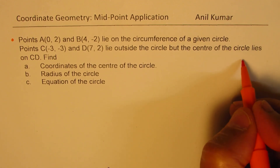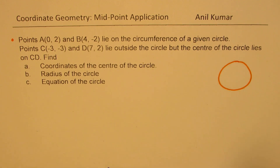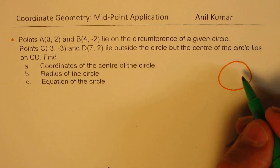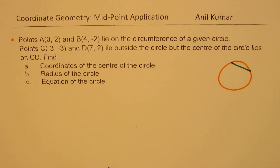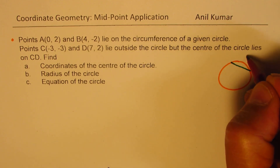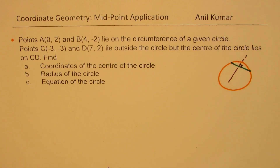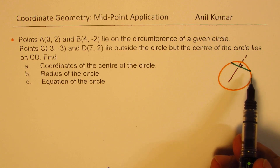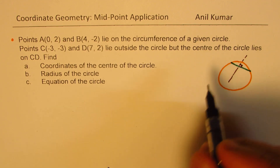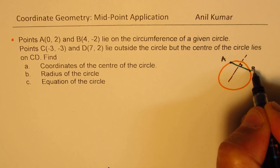The concept I am going to use is this: if you have a chord, then the right bisector of the chord will always pass through the center. So if we have a chord, the right bisector will always go through the center — that is one concept. So we will take these two points; this is not really to scale, but we will just take this point as A and this as point B.